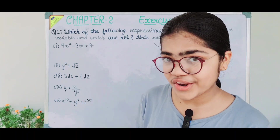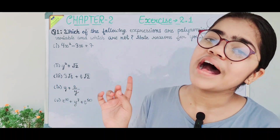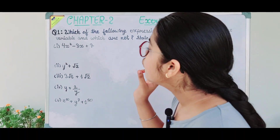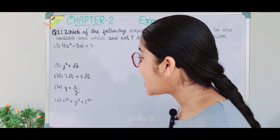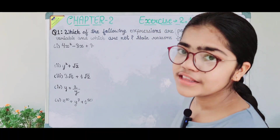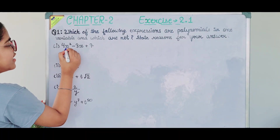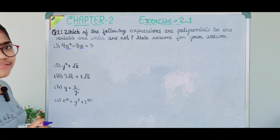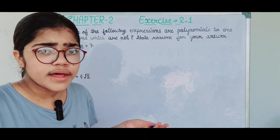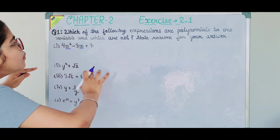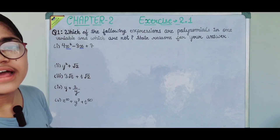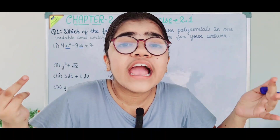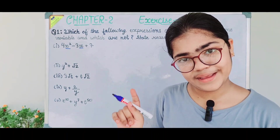Polynomials are algebraic expressions where variables have whole number powers. If the power of the variable is in decimal, in fraction, or negative, then it is not a polynomial — but it is still an algebraic expression.